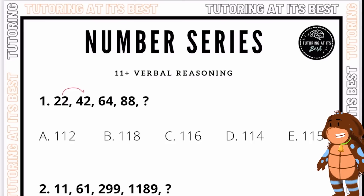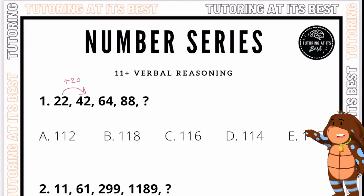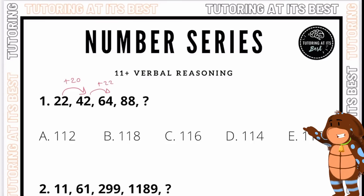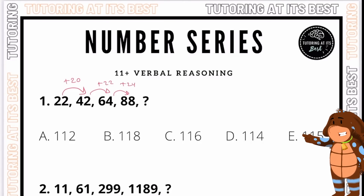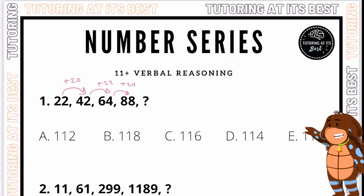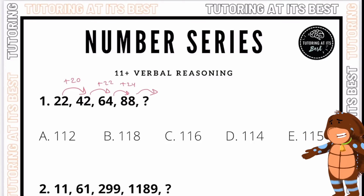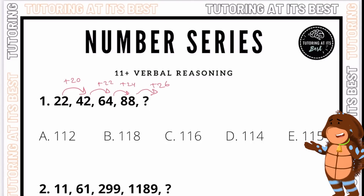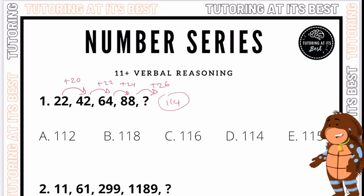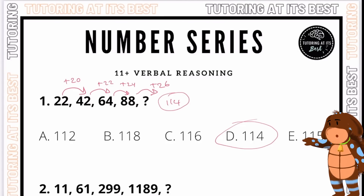The difference between 22 and 42 is add 20. Then from 42 to 64, we add 22. And then from 64 to 88, we add 24. So you can see it's adding two more every single time. So with 88, we go ahead and add 26, which gives us 114. So D is our answer.